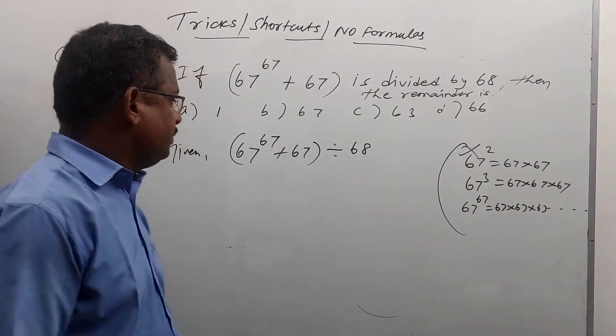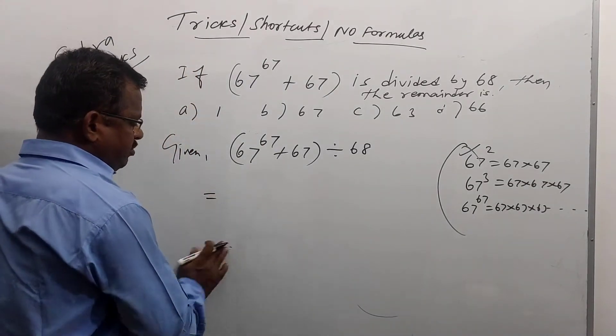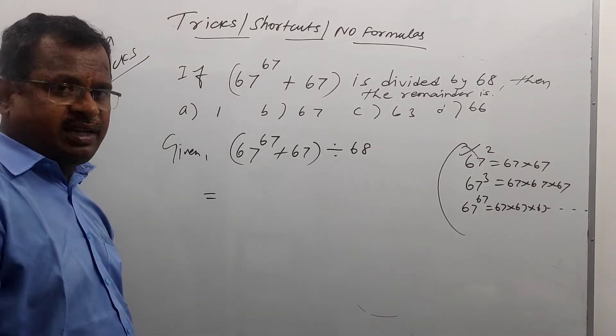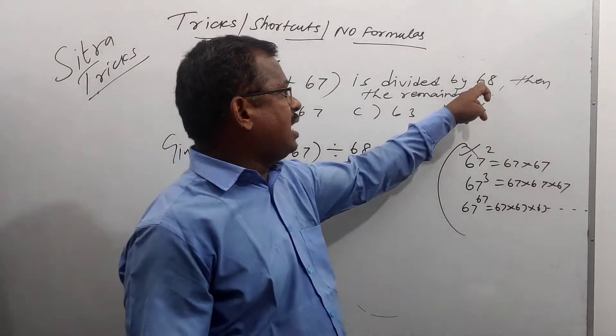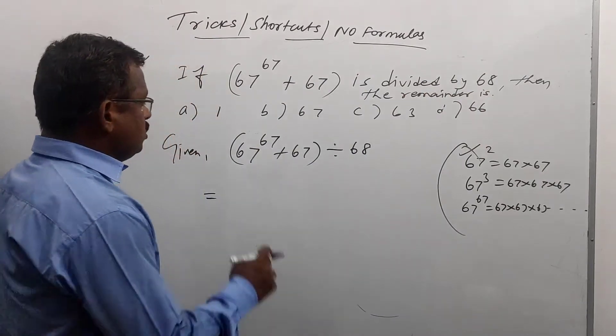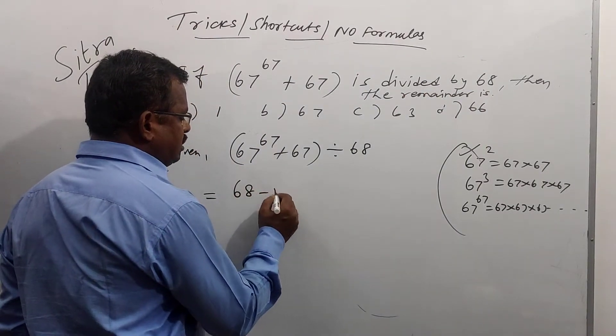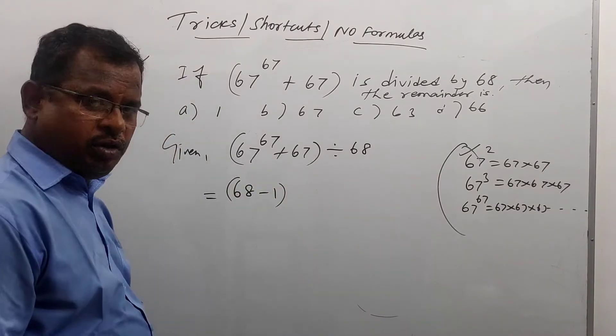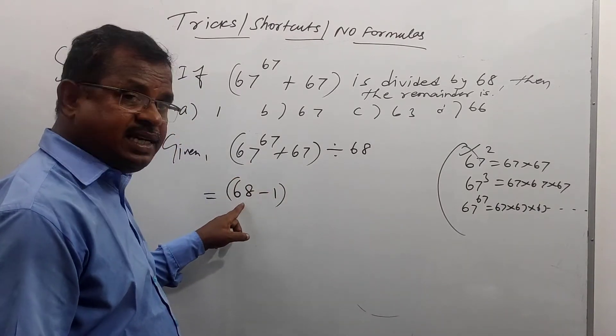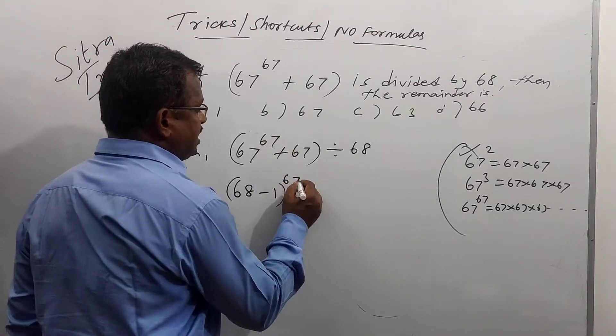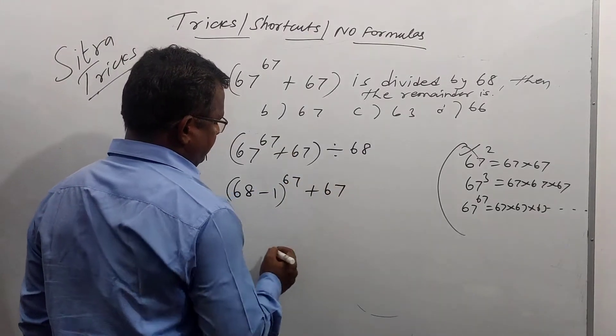This is very, very important. How to solve the sums with tricks? 67, how can we write? Because we write divisible by 68. So, 67 we can write 68 minus 1. Do you know? 67 we can write 68 minus 1.